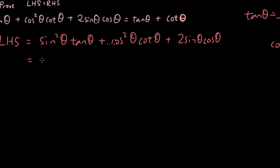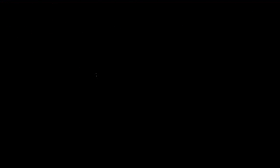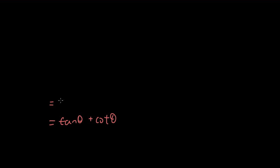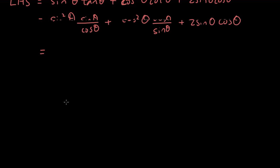Applying this: sine squared theta times sine theta over cosine theta, plus cosine squared theta times cosine theta over sine theta, plus two sine theta cosine theta. And working backwards from the bottom, I change tan theta to sine theta over cosine theta and cotangent to cosine theta over sine theta, gradually working down so they will hopefully meet in the middle.